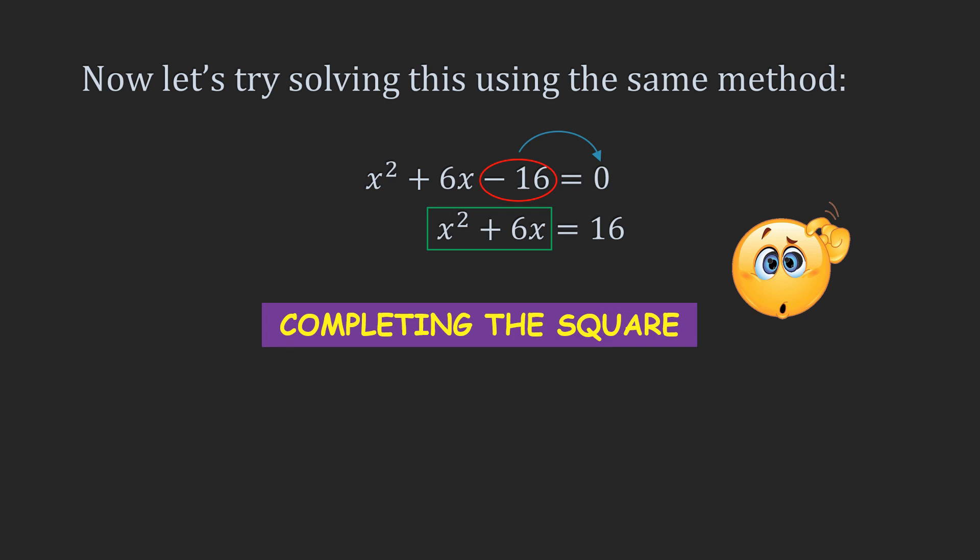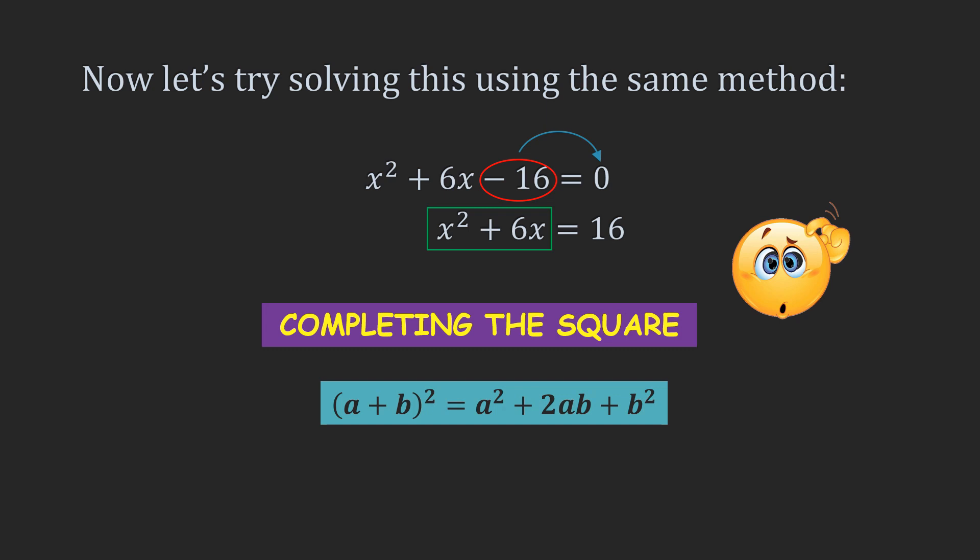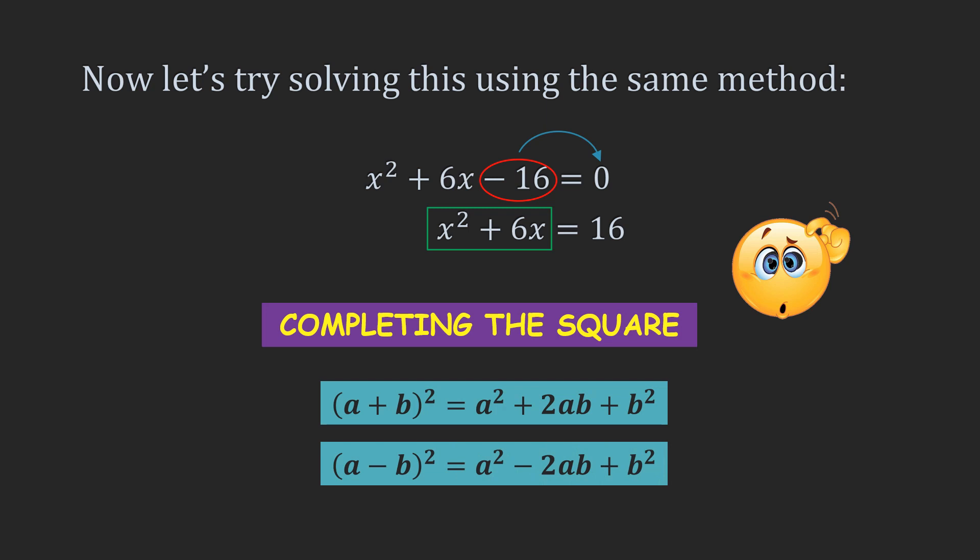Before we proceed, there are two identities that we must be clear with. The first one is: (a + b)² = a² + 2ab + b². The second one is: (a - b)² = a² - 2ab + b². Note that in the expansion of these identities, the only difference is in the sign of the middle term. When we solve any equation using the completing the square method, it is this sign that defines the sign of the square term formed.